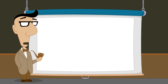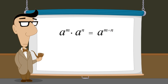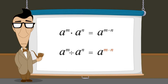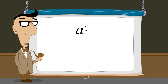Let's summarize these rules of exponents by using letters instead of specific numbers. To multiply exponential expressions with the same base, add their exponents. And to divide exponential expressions with the same base, subtract their exponents. In the next lecture, we will use these rules to explore more properties of exponents, including the meaning of exponents of one, zero, or any negative integer.